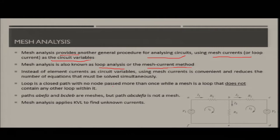A loop is a closed path with no node passed more than once, while a mesh is a loop that doesn't contain any other loop within it. In the figure, the path a-b-e-f-a is one mesh, and b-c-d-e-b is another loop. However, the path a-b-c-d-e-f-a is not a mesh because it contains two meshes within it.